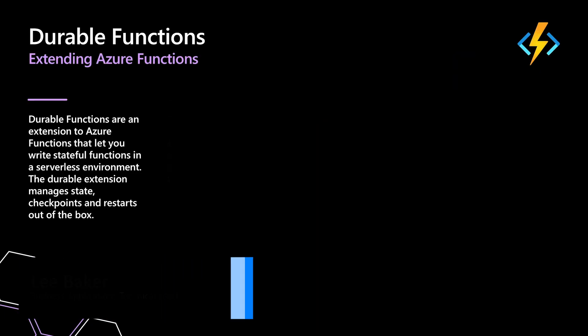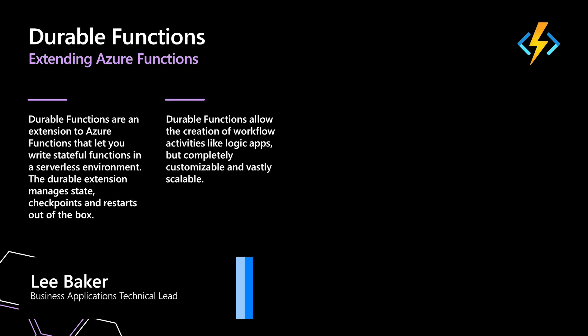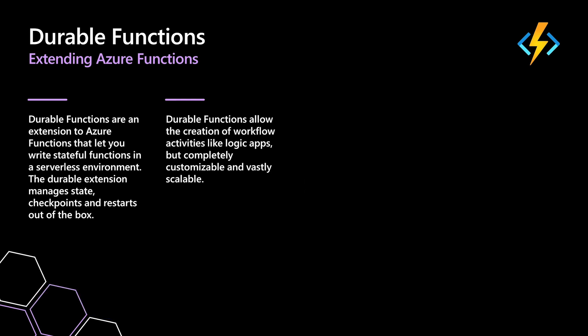Durable functions are a layer that sit on top of Azure Functions that let us do orchestration. If we build an orchestration function — say we work in financial services, in a bank — think about bank account opening. We fill in a load of fields on a form, click a button, and go off to do a credit check, address checking, maybe criminal records checks. The orchestration part of durable functions lets us do that.